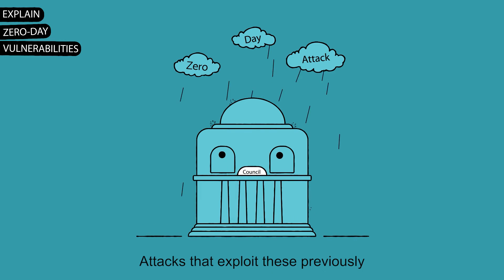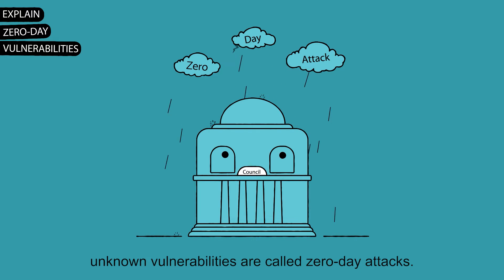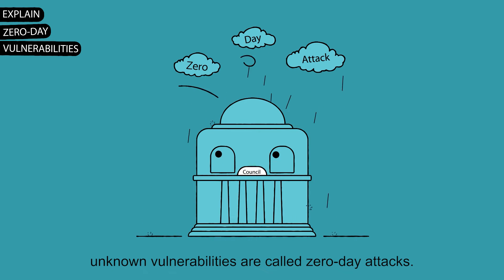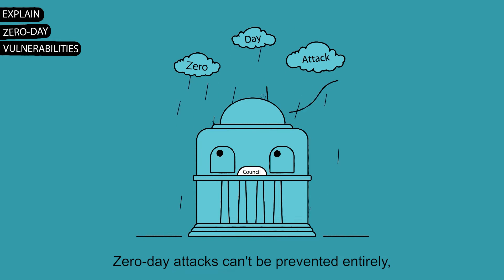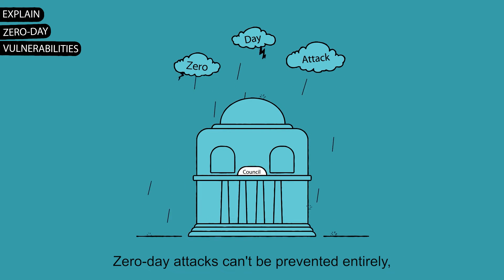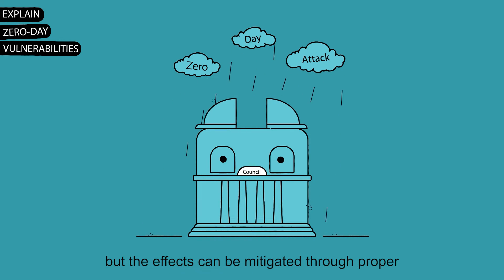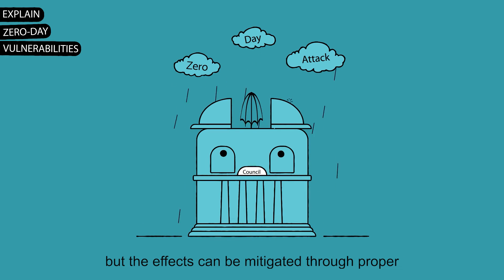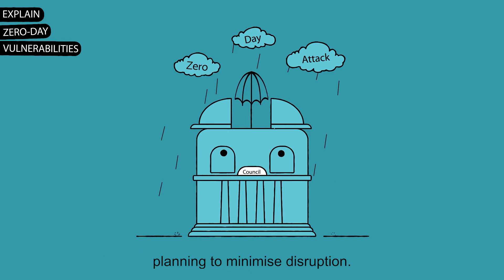Attacks that exploit these previously unknown vulnerabilities are called zero-day attacks. Zero-day attacks can't be prevented entirely, but the effects can be mitigated through proper planning to minimise disruption.